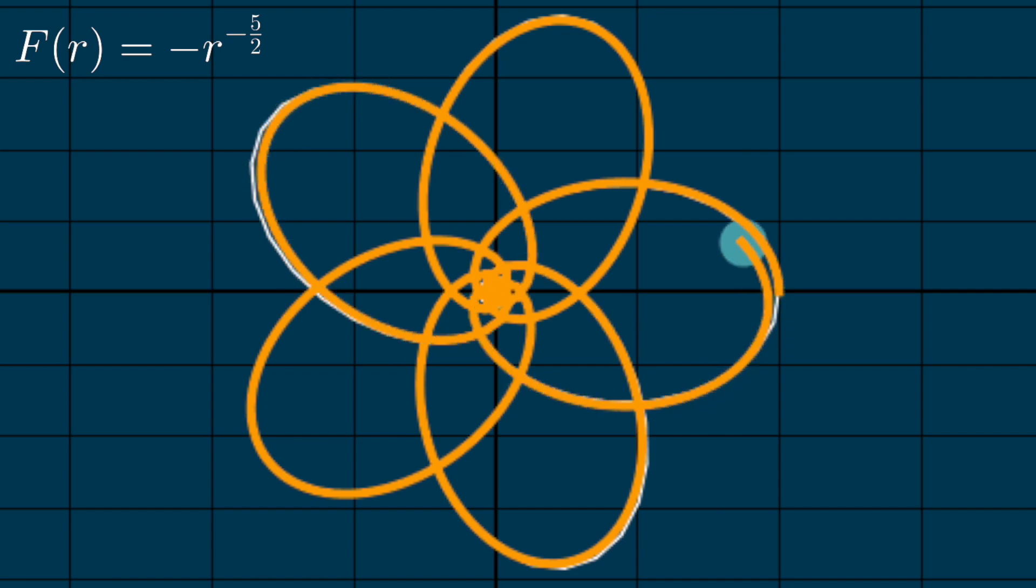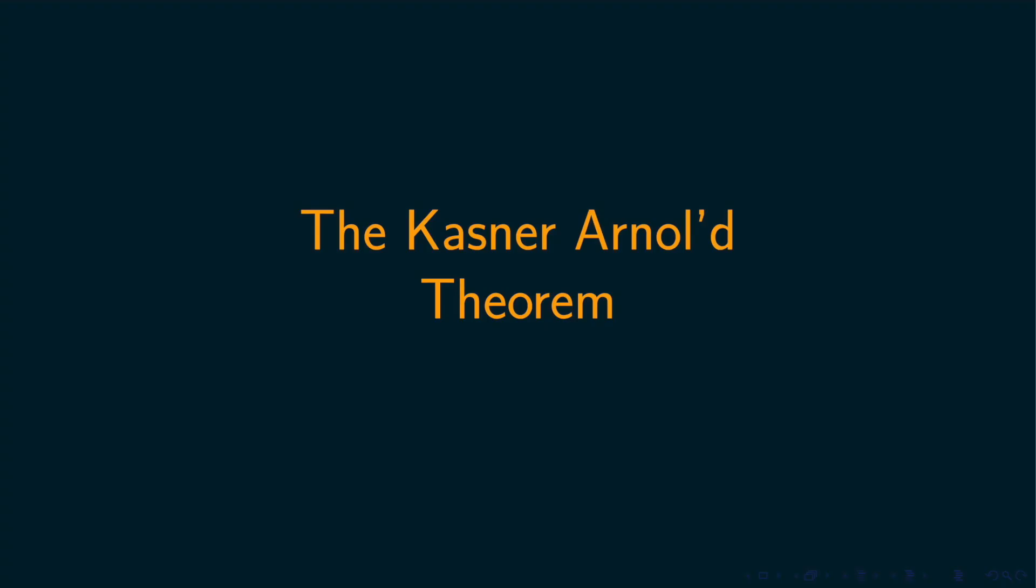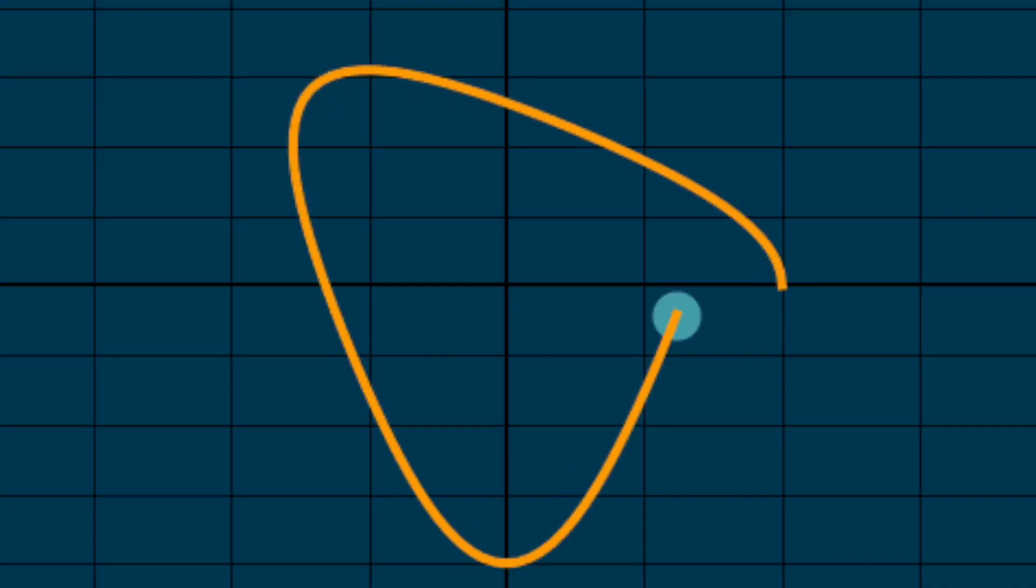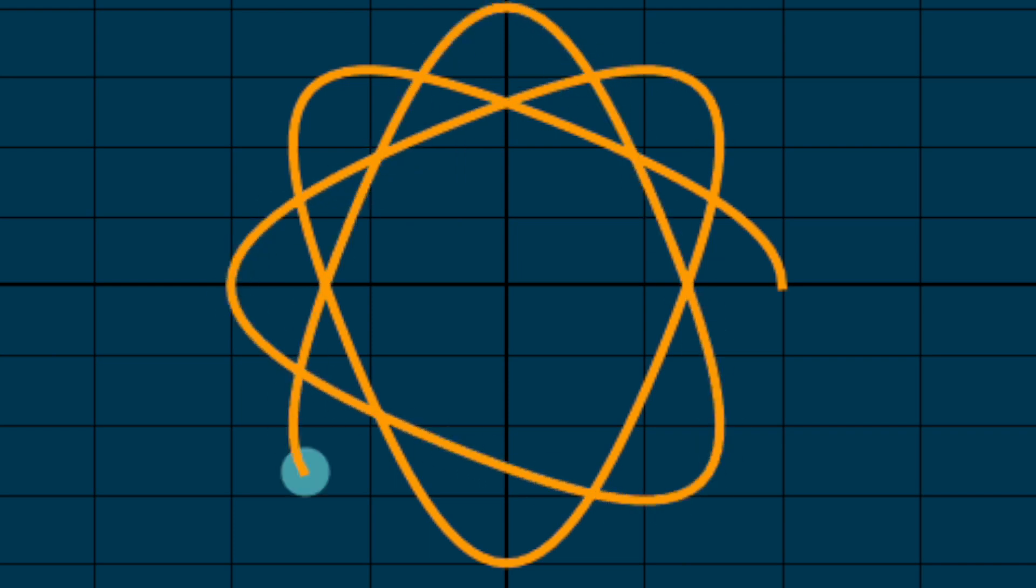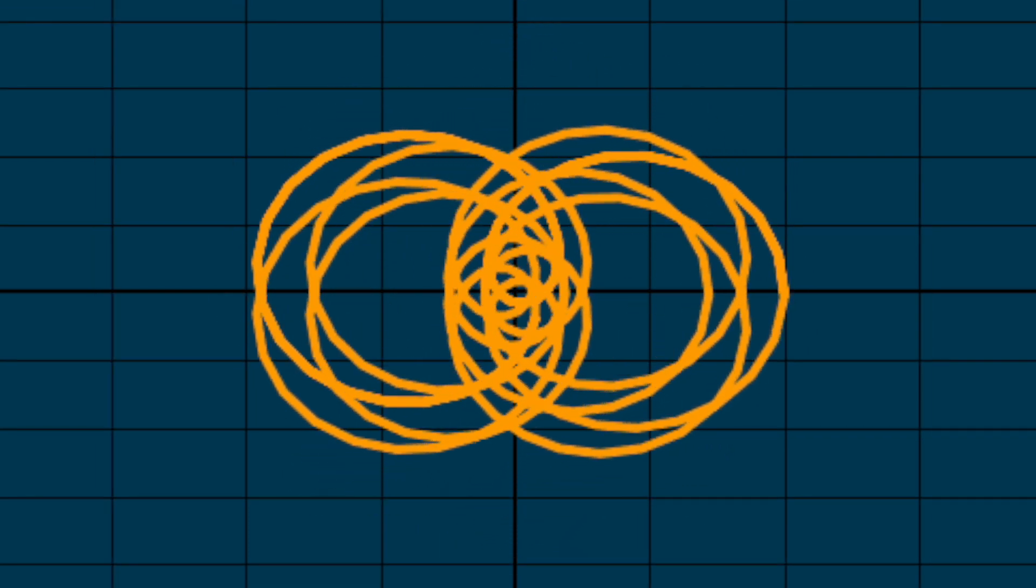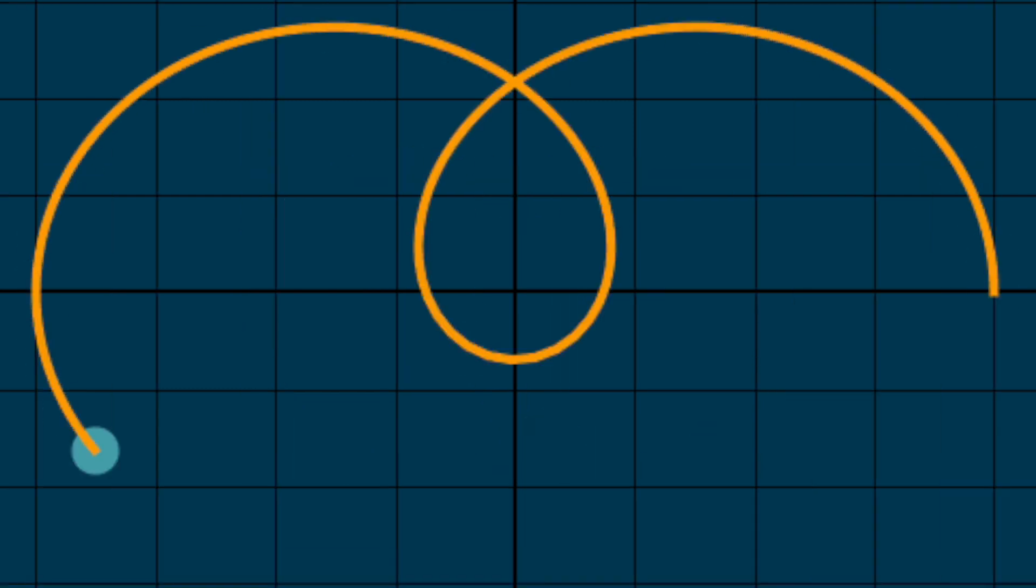Again, we see that one orbit maps to another. This suggests that our reasoning from earlier extends to other central force fields, and it turns out this is true. We have that every force law pairs up with a dual.